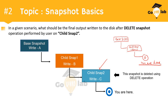Always remember: whenever you delete a snapshot in a snapshot chain tree, its data must always be merged to its parent disk before the delete operation is performed. In this scenario, because we are deleting a specific snapshot, its data must first be merged to its parent disk before discarding that snapshot.